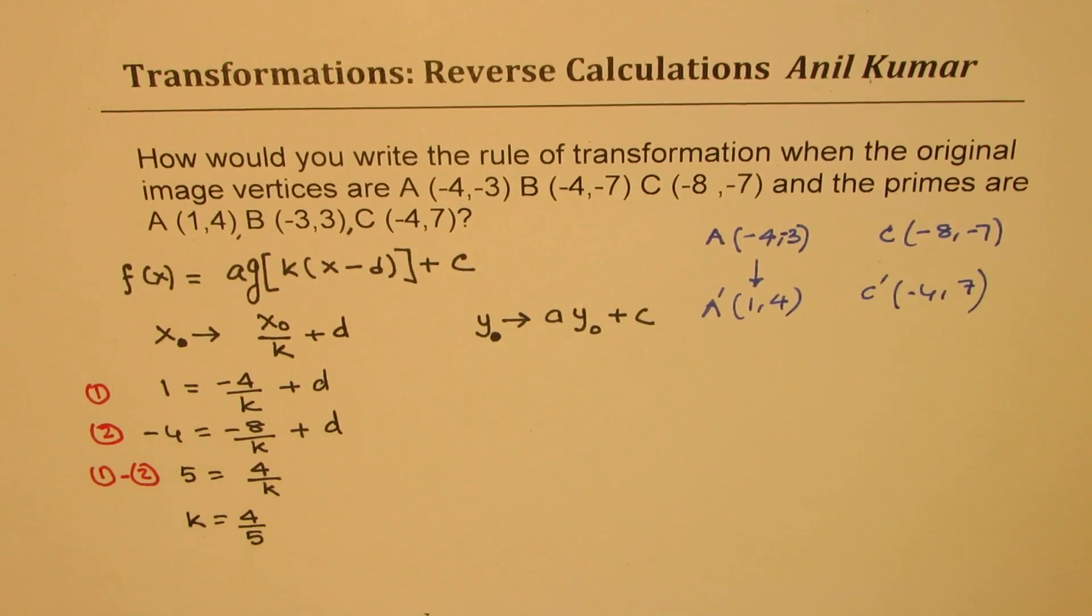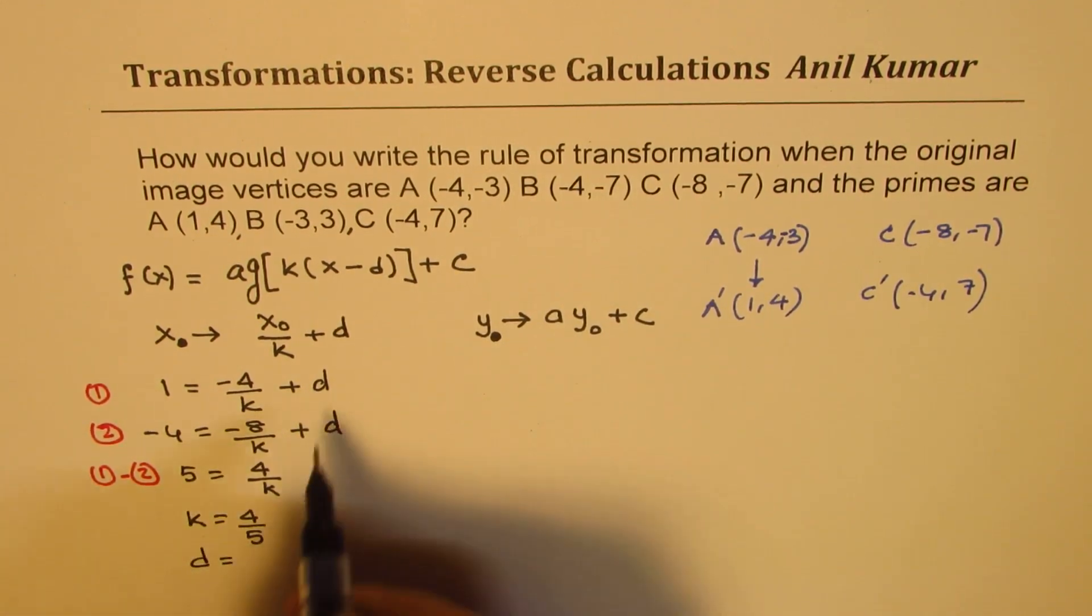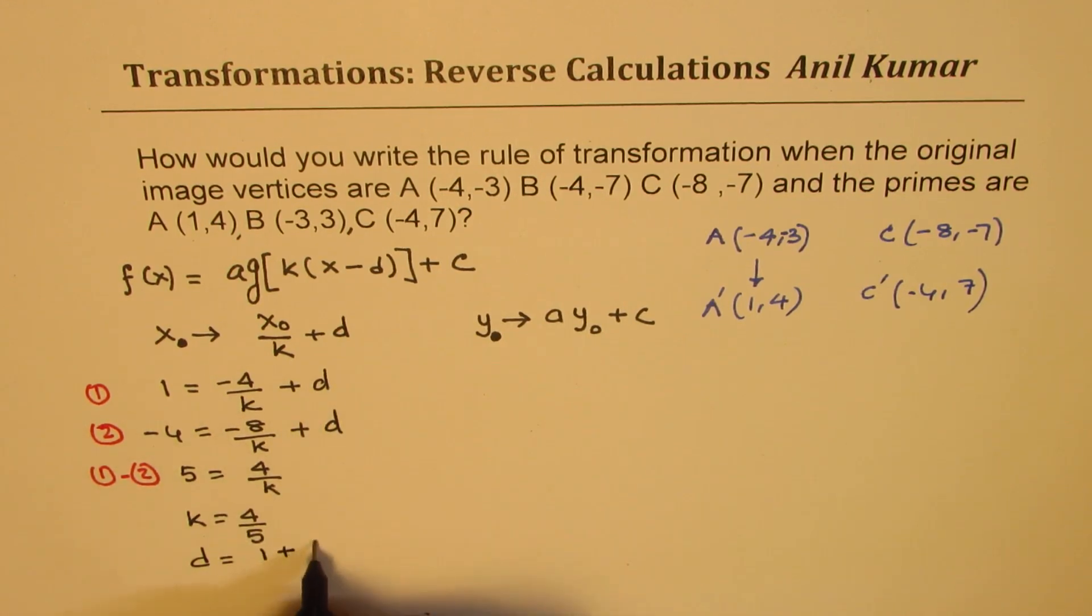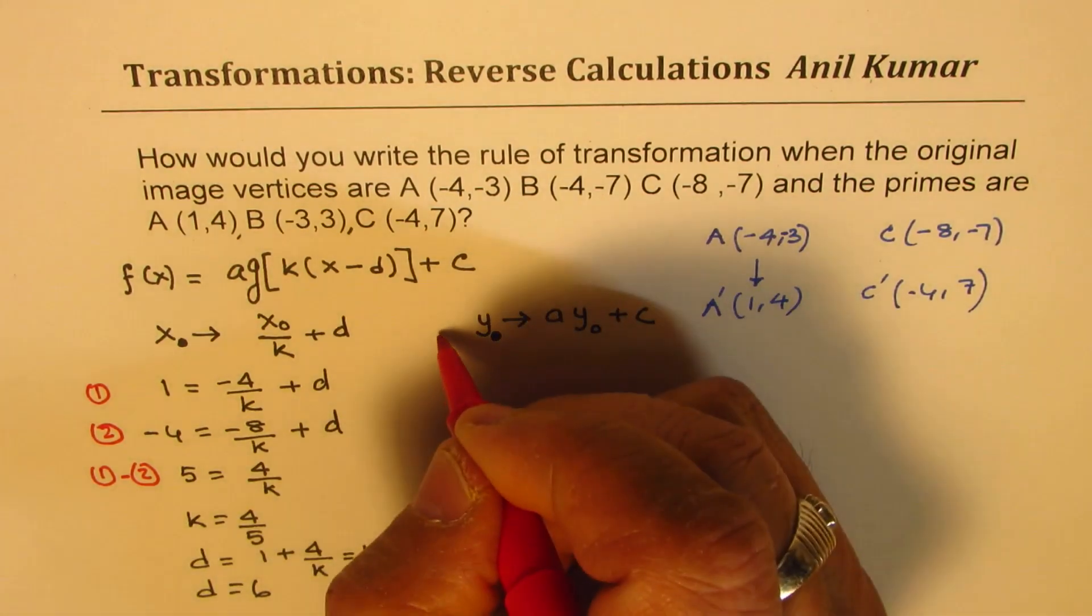And the value of d can be calculated as d = 1 + 4/k, or 1 + 4/(4/5), so 4 times k is 5, which gives you the value of d as 6. So using the x-coordinates, we found the transformations which are horizontal compression and horizontal translation.